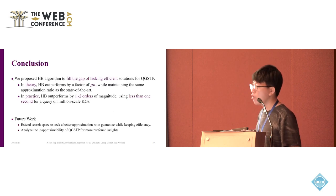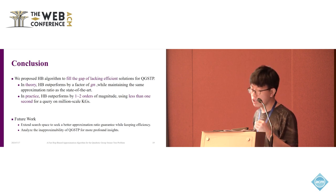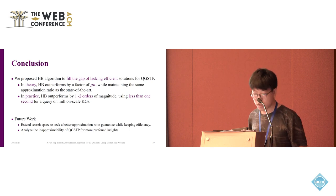In conclusion, to fill the gap of lacking efficient algorithms for QGSTP, we propose the HB algorithm. In theory, the time complexity of the HB algorithm is lower by at least a factor of G-N than other algorithms for QGSTP. We prove that it has the same approximation ratio as the state-of-the-art. In practice, HB outperforms one to two orders of magnitude, and it uses less than one second to answer a query on million-scale KGs. In our future, we will try to extend the search space to seek a better approximation ratio guarantee, while keeping its efficiency. Additionally, we will analyze the in-approximability of the QGST for more profound insights. And that's all. Thank you.